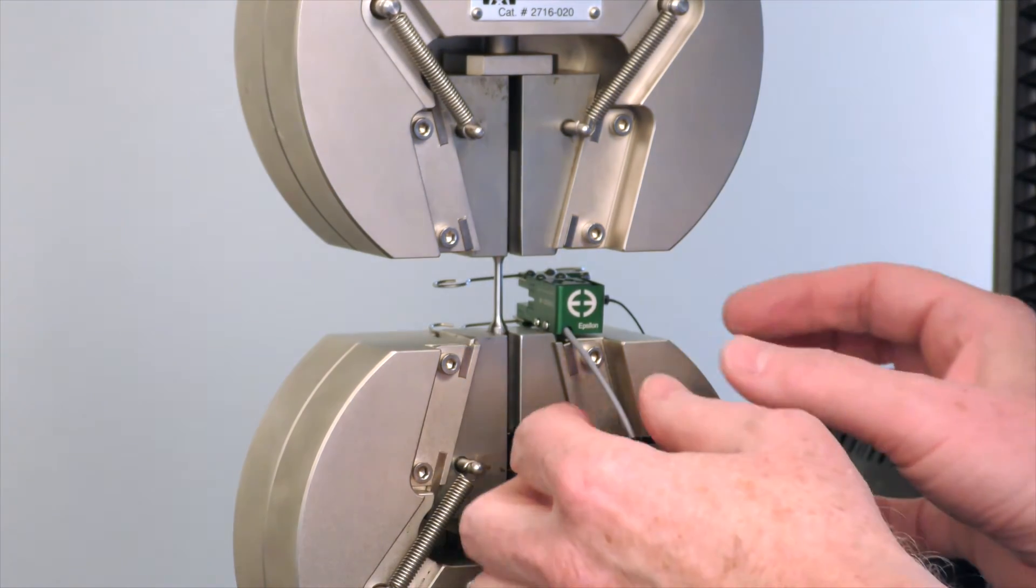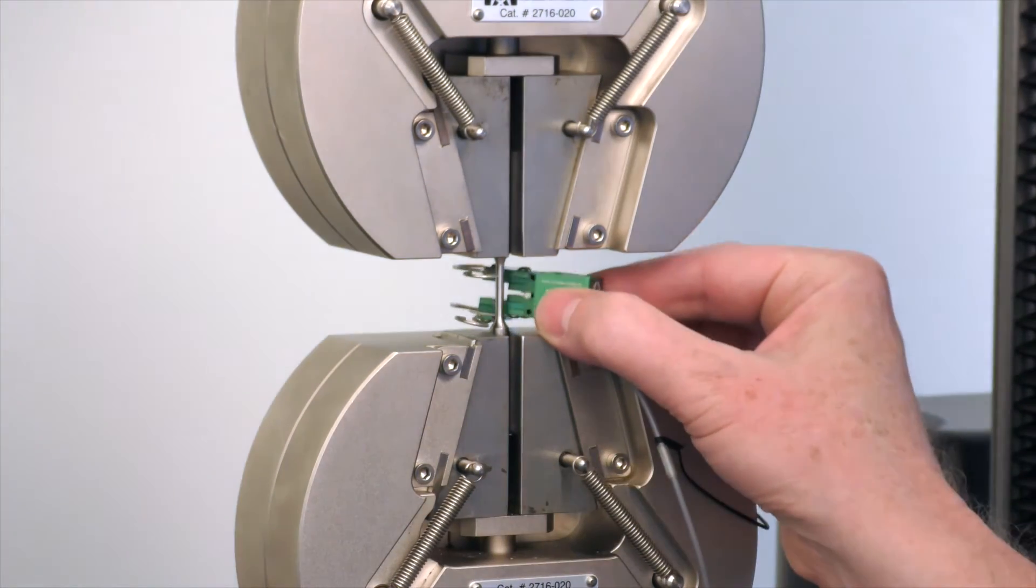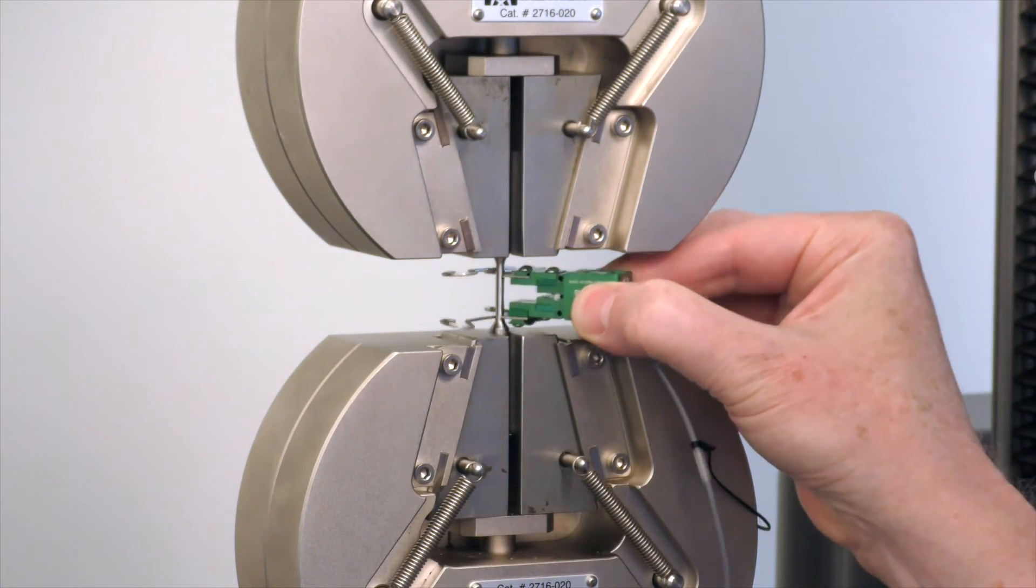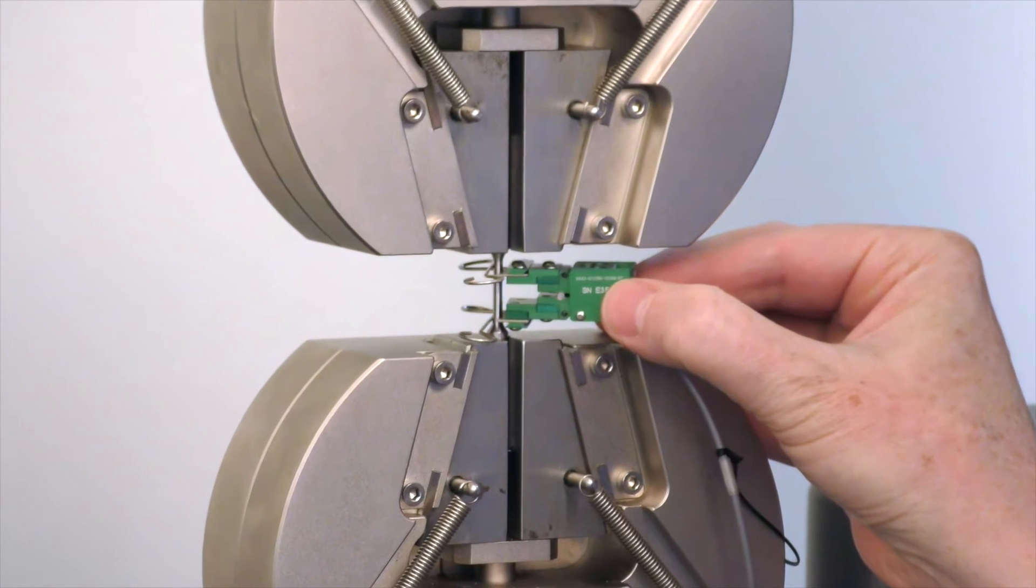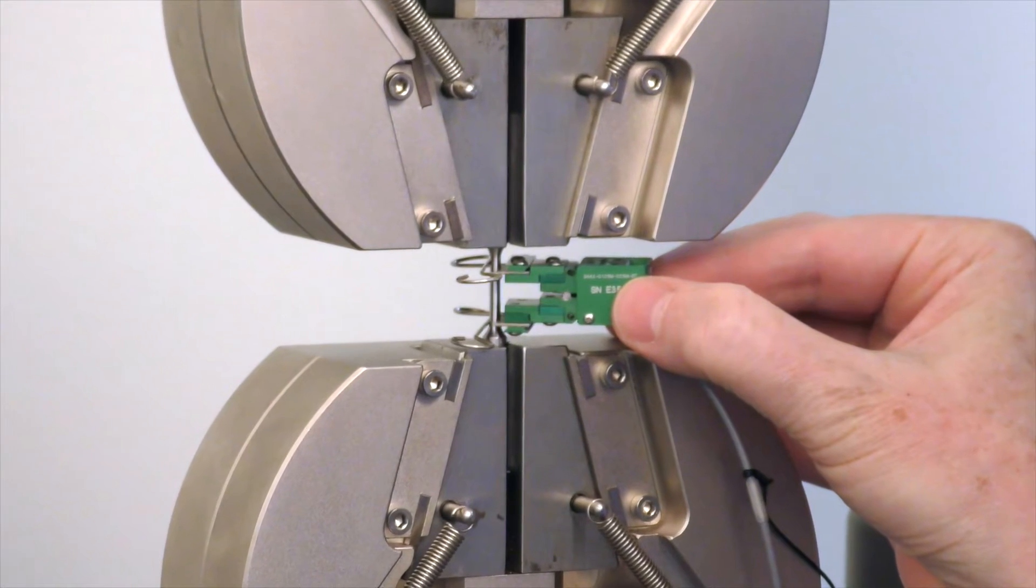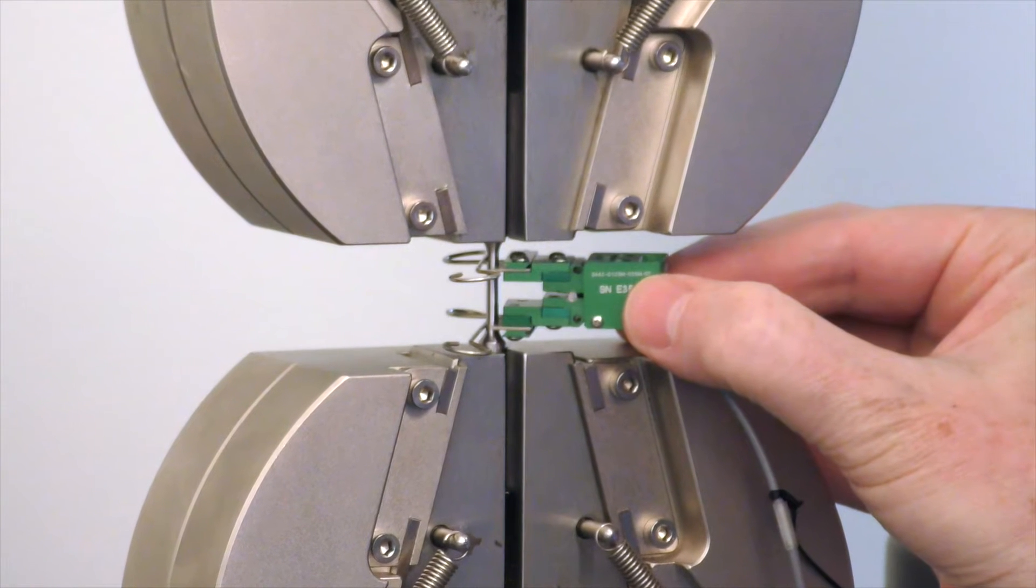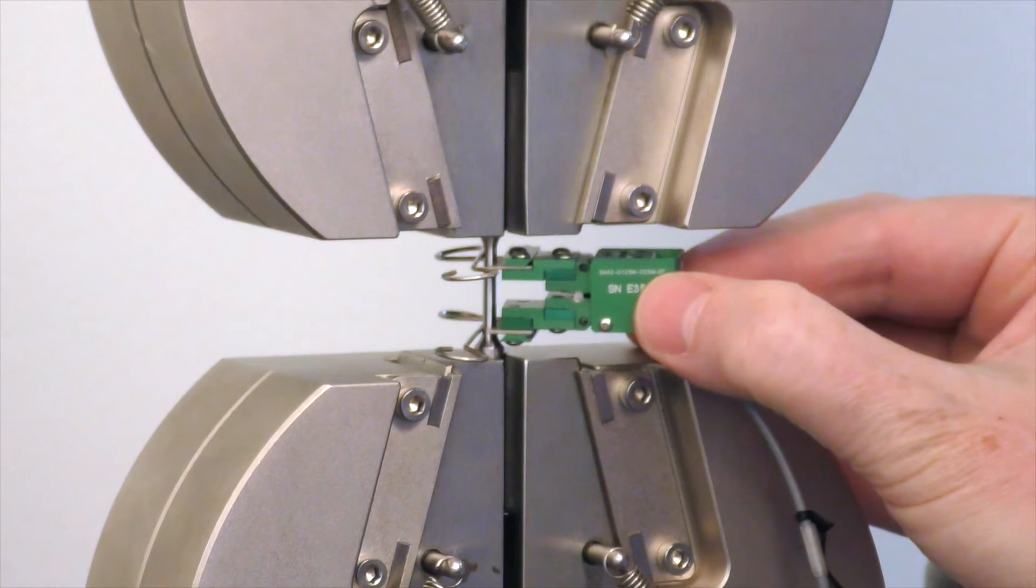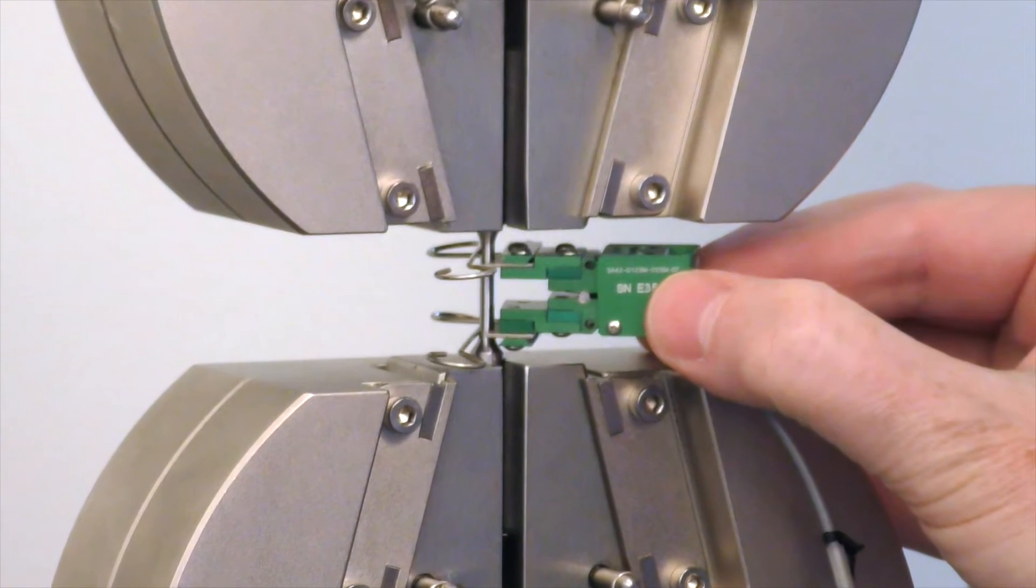Mount the extensometer on the specimen. Using two hands to open the wire forms is preferred, but you can use one hand if space is limited. Ensure that the extensometer is in the desired axial position on the specimen and that the extensometer's measuring axis is aligned with the specimen's test axis.